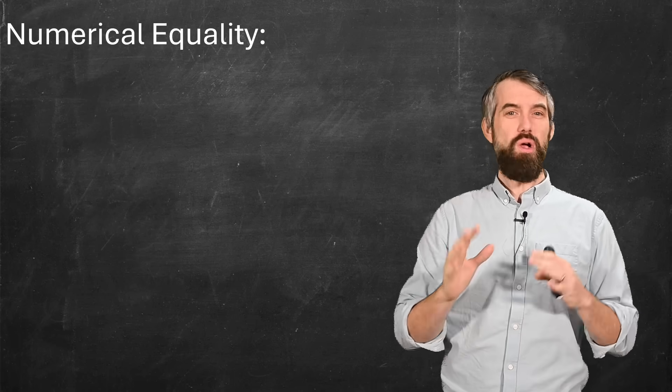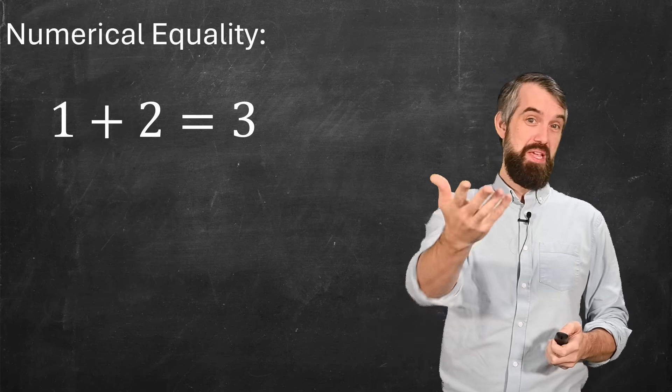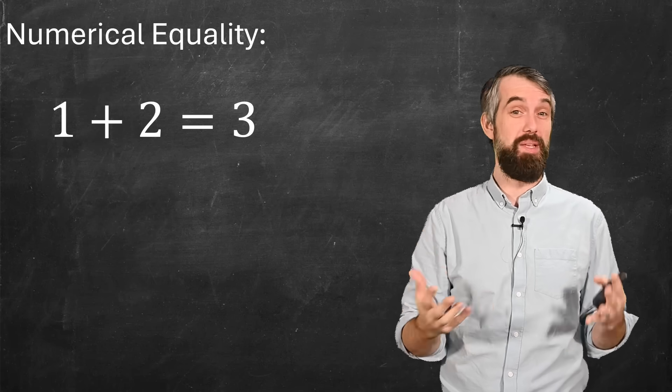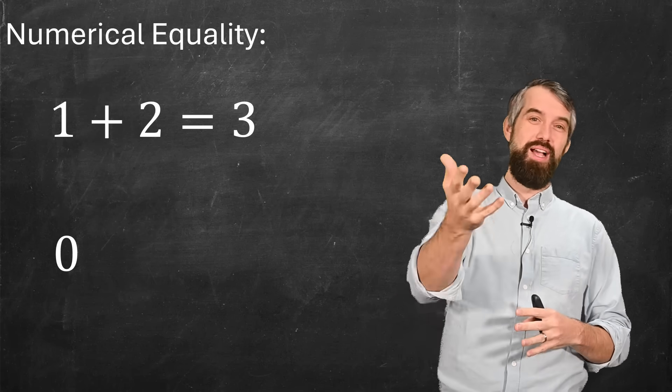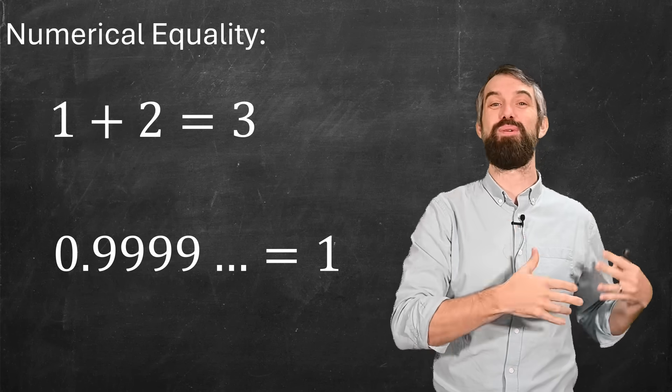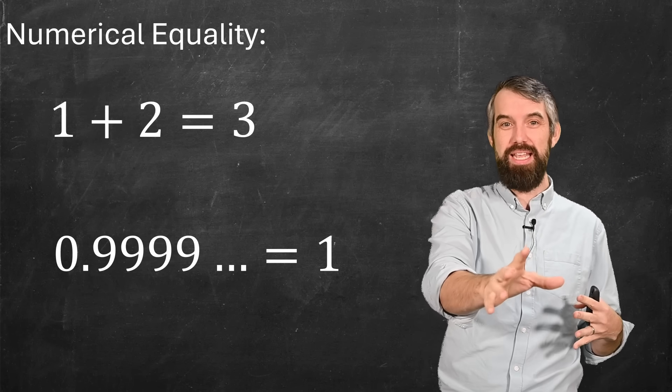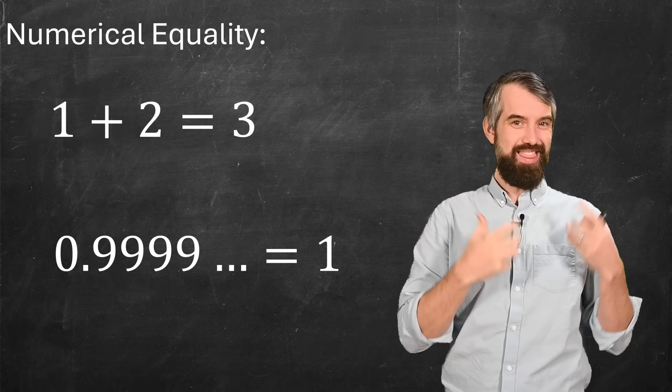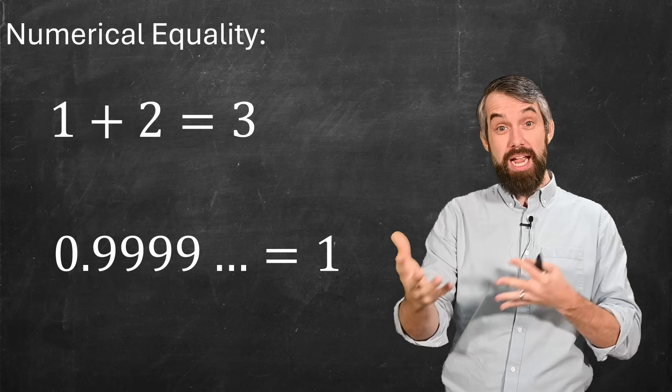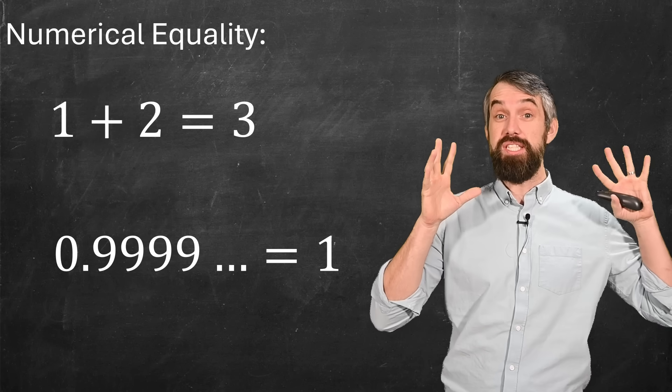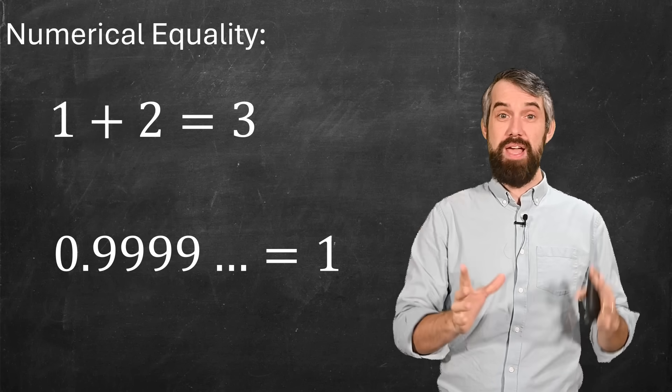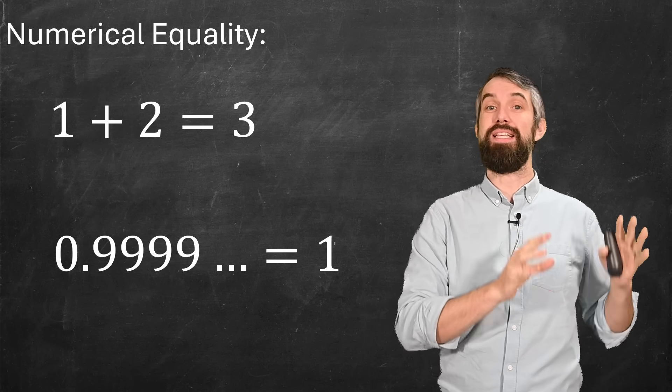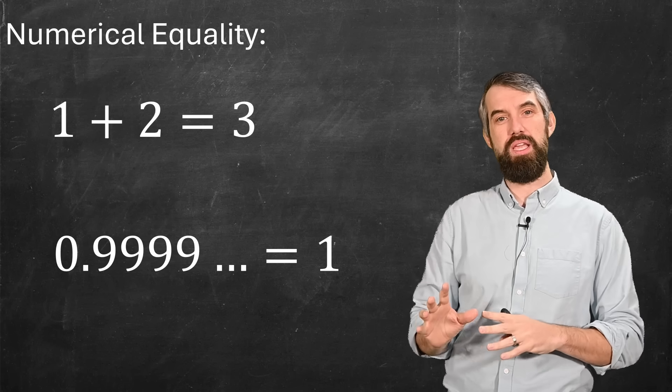For example, numerical equality is probably the first thing that comes to mind. Something like 1 plus 2 equals 3, or maybe more controversially, 0.9999 repeating equals 1. Both statements say that the thing represented on the left and right side represent the same number. That is, 1 plus 2 is the same quantity as the number 3.